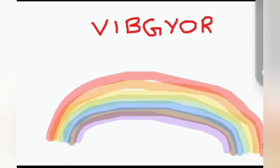This rainbow has seven colors, and they are VIBGYOR. VIBGYOR means V for Violet — yes, the first one is Violet — I for Indigo.